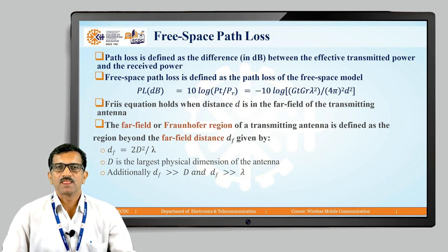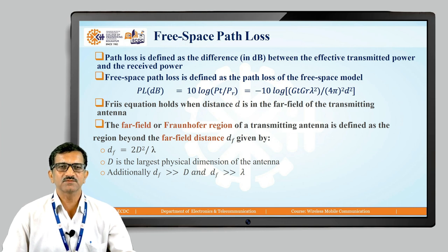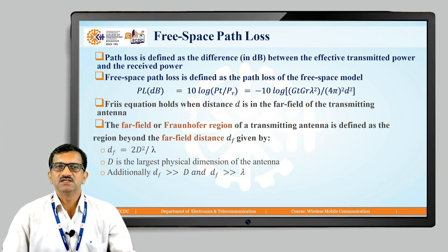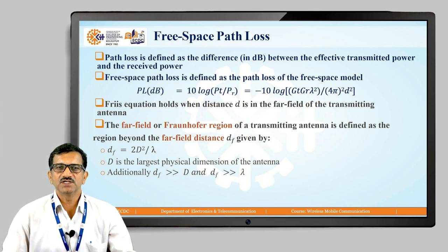Free-space path loss: path loss is defined as the difference in dB between the effective transmitted power and the received power. Free-space path loss PL in dB can be calculated as 10 log(PT / PR), which can be written as minus 10 log of GT × GR × λ² divided by (4π)² × d². This gives the information about path loss in dB.